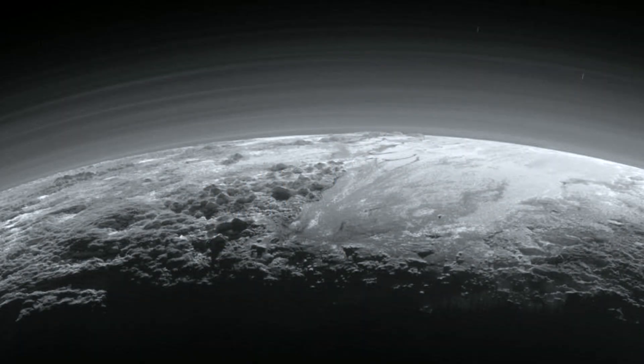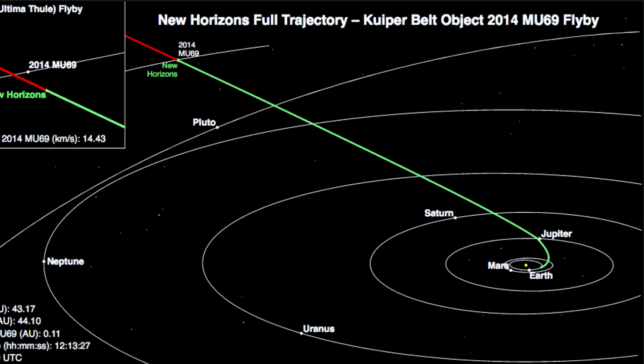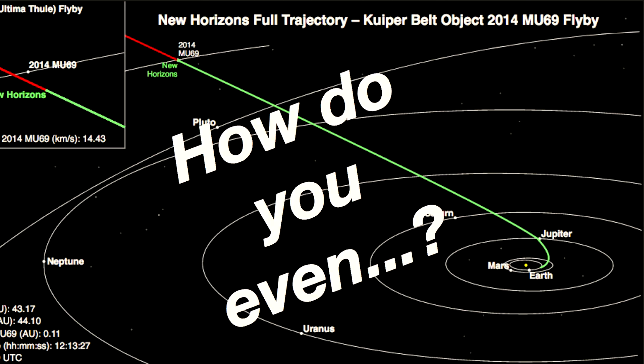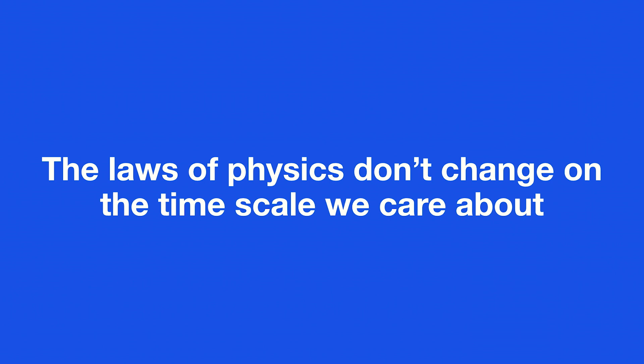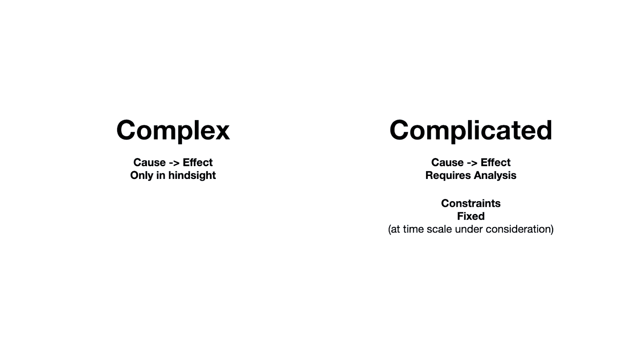Let's say we want to take a picture of Pluto. We do some math, figure out which way to go, launch a spaceship that travels for nine and a half years, 3.26 billion miles, and gets within 7,759 miles of Pluto to take some pictures. How do you even conceive of doing this? A key observation is that the laws of physics don't change on the time scale that we care about. The constraints we are operating with remain fixed in the time scales of whatever it is we're doing.